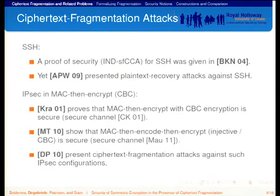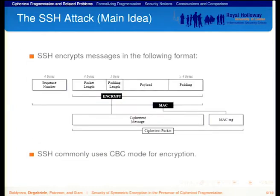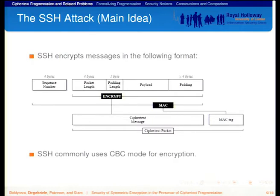To give you an idea of how ciphertext fragmentation can be abused by an adversary, I'll explain how the SSH attack works. This is how SSH encrypts a message. The main thing to notice is the packet length field, which is how SSH handles ciphertext fragmentation. Encryption is done in an encrypt-and-MAC manner: a MAC is computed over the encoded plaintext, then the plaintext is encrypted, and the MAC is appended to the ciphertext. As soon as SSH has received a complete first ciphertext block, it decrypts that block and inspects the packet length field to know how much ciphertext to wait for before it can decrypt and verify the MAC.